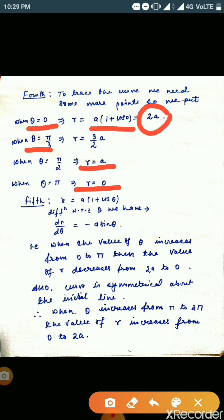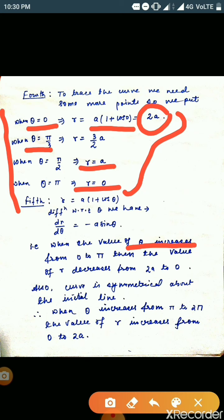In the fifth step, we differentiate the given equation with respect to θ. We get dr/dθ = -a sinθ. When θ increases from 0 to π, the value of r decreases from 2a to 0. This is also confirmed by the fourth step. The curve is symmetrical about the initial line, as seen in step one.